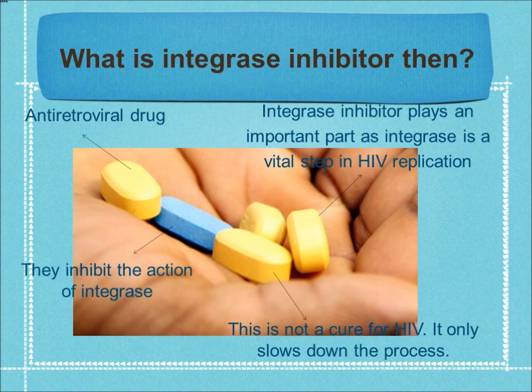What is an integrase inhibitor? It is an antiretroviral drug that inhibits the action of integrase. This is not a cure for HIV — it only slows down the process. Integrase inhibitors play an important part since integrase is a vital step in HIV replication. It basically prevents the pre-integration complex from being integrated into the host cell DNA, so as to terminate the replication process.